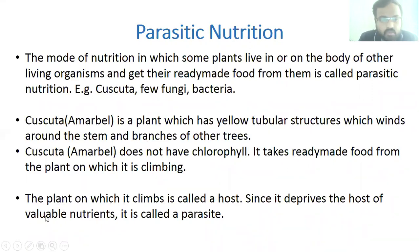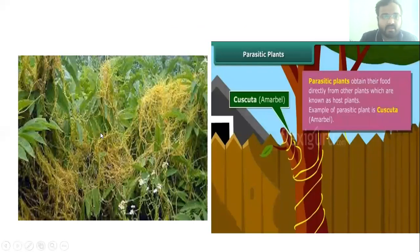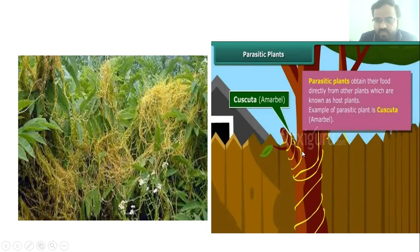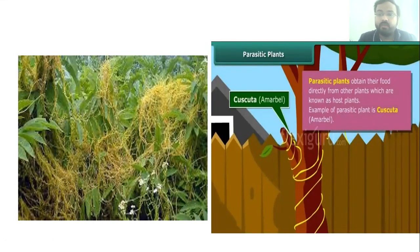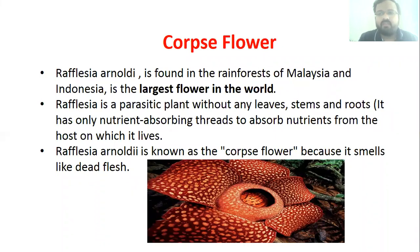Since Cuscuta deprives the host of valuable nutrients, it is called a parasite. As seen in the figures, the yellow structures of Cuscuta or Amarbel are coiled around other green plants, sucking nutrition from them. This is parasitic mode of nutrition.